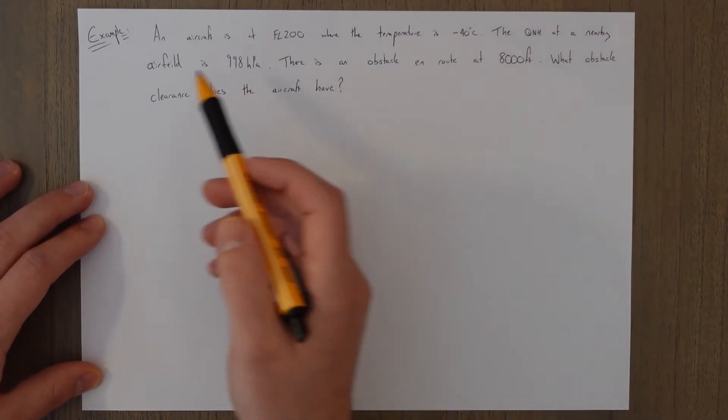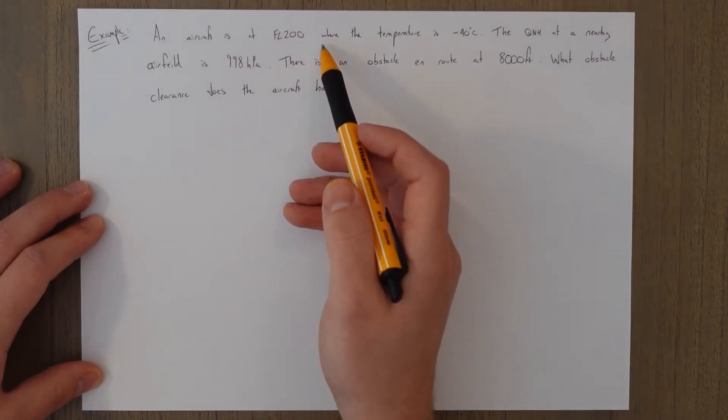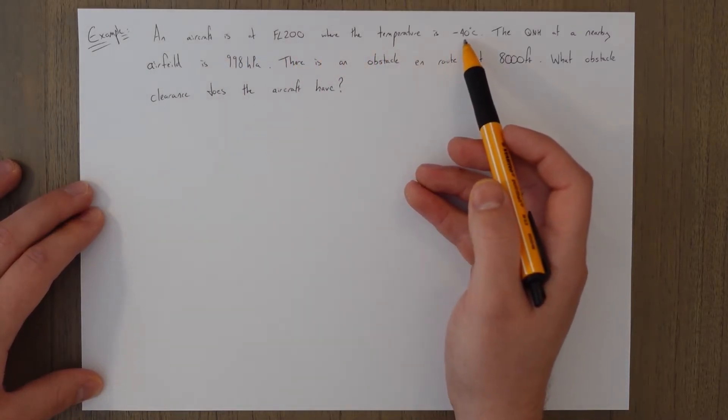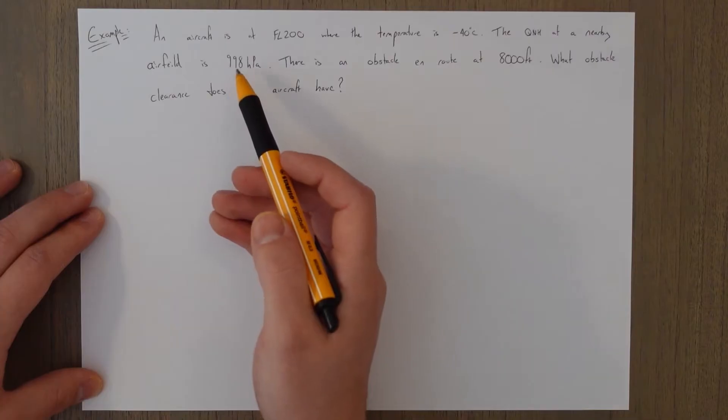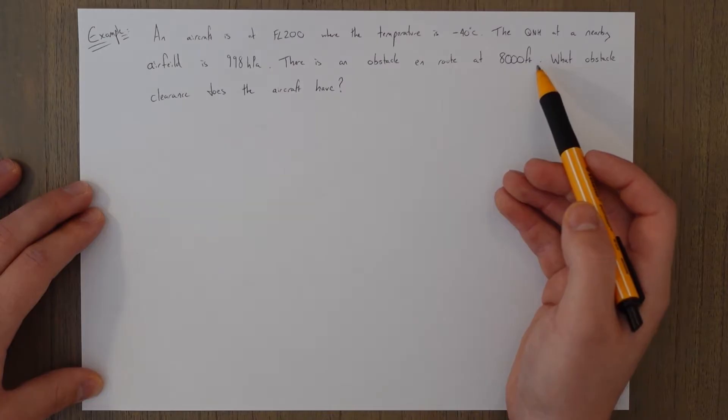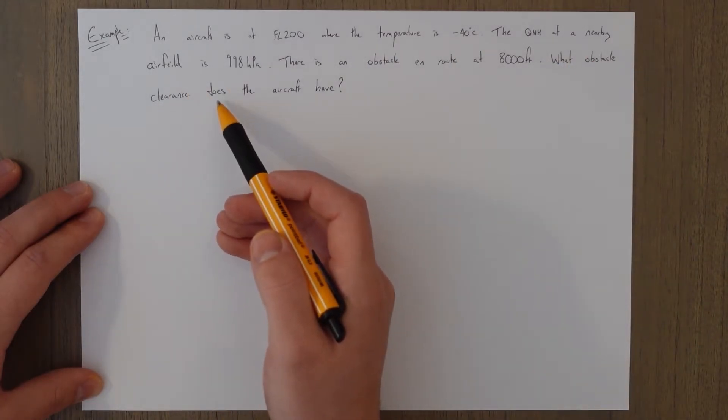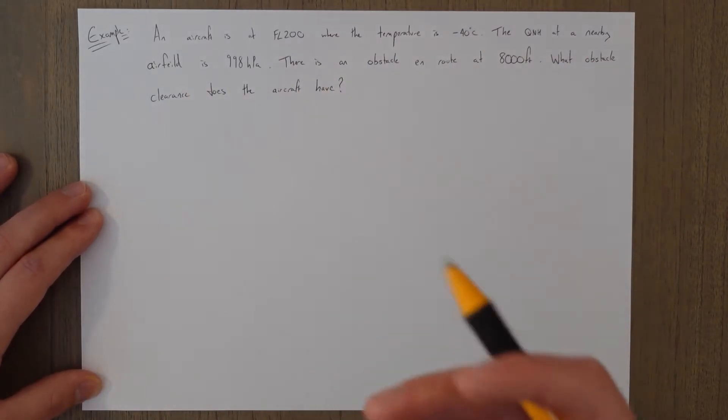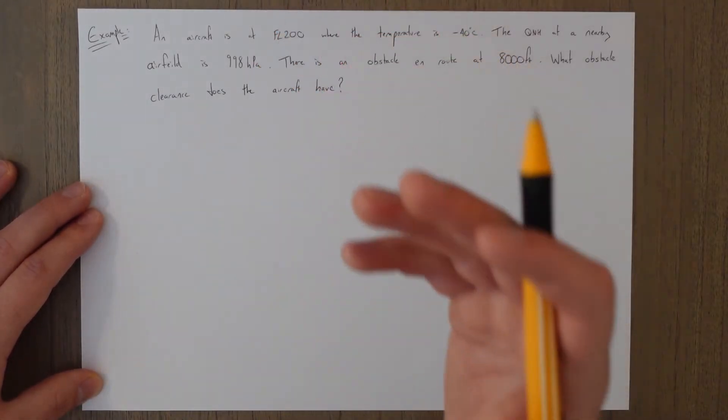An aircraft is at flight level 200 where the temperature is minus 40 degrees C. The QNH at a nearby airfield is 998 hectopascals. There's an obstacle en route at 8000 feet. What obstacle clearance does the aircraft have? So draw the picture.